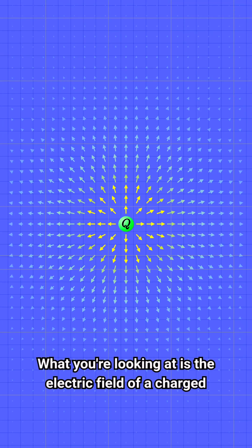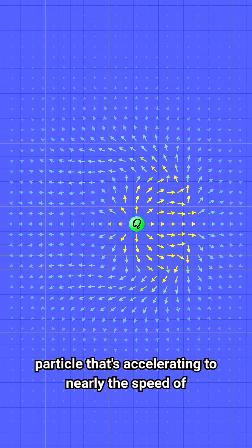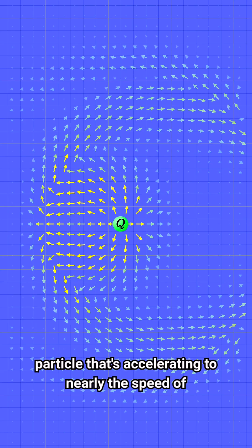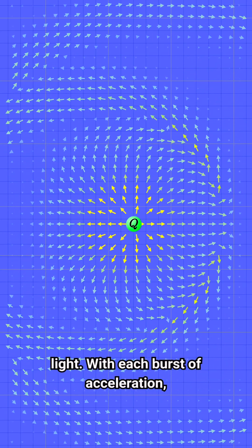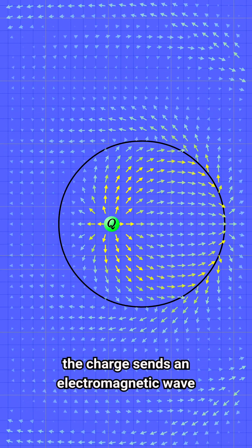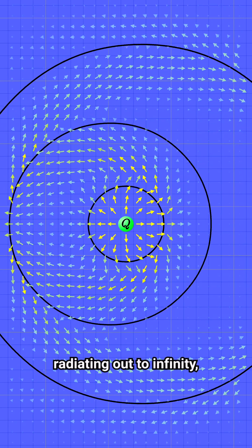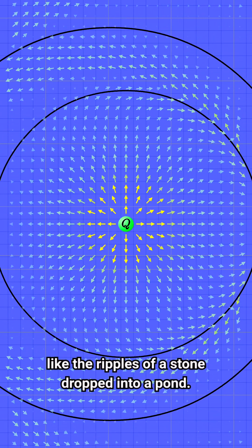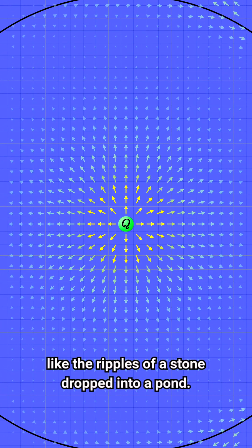What you're looking at is the electric field of a charged particle that's accelerating to nearly the speed of light. With each burst of acceleration, the charge sends an electromagnetic wave radiating out to infinity, like the ripples of a stone dropped into a pond.